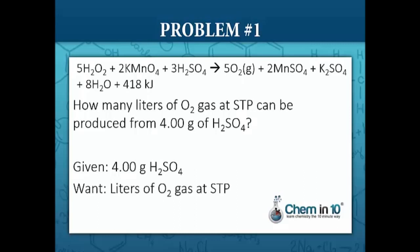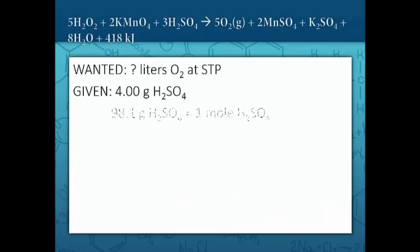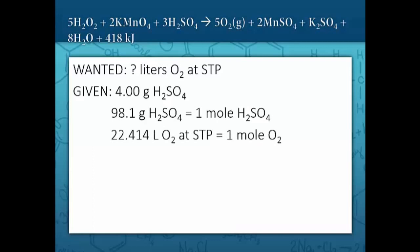We're given four grams of sulfuric acid and we want to find out how many liters of oxygen gas at STP that would make. Whatever we're given, we need to turn it into moles. We can convert four grams of sulfuric acid to moles using the molar mass: 98.1 grams per mole. To convert liters of any gas at STP to moles, one mole of any gas at STP takes up 22.414 liters. Finally, we need to convert between sulfuric acid and oxygen using the balanced equation: three moles of sulfuric acid produce five moles of oxygen.